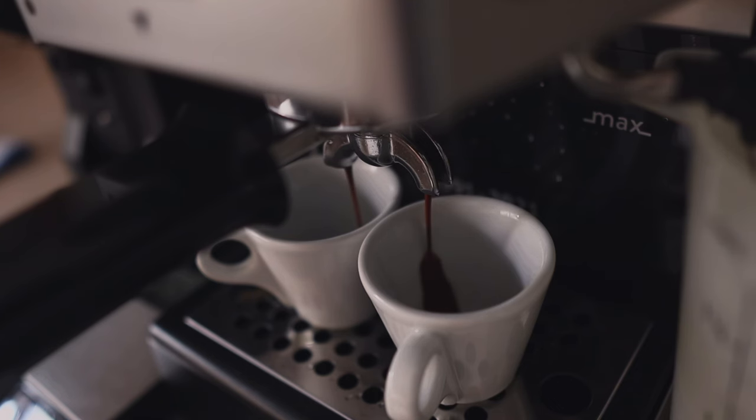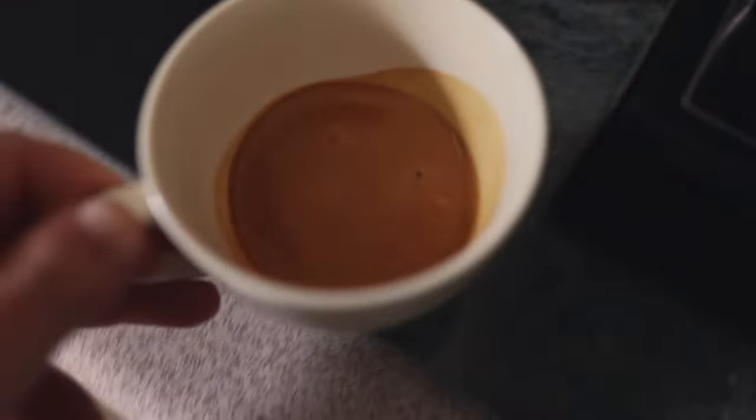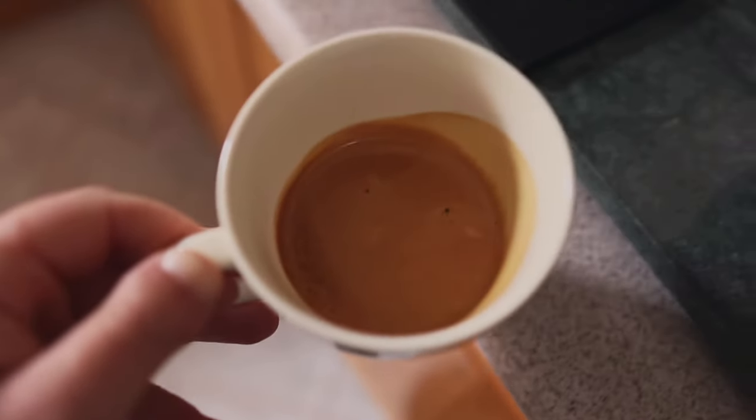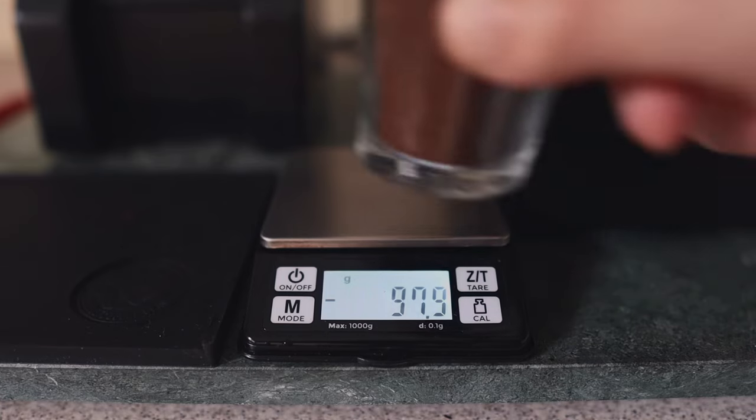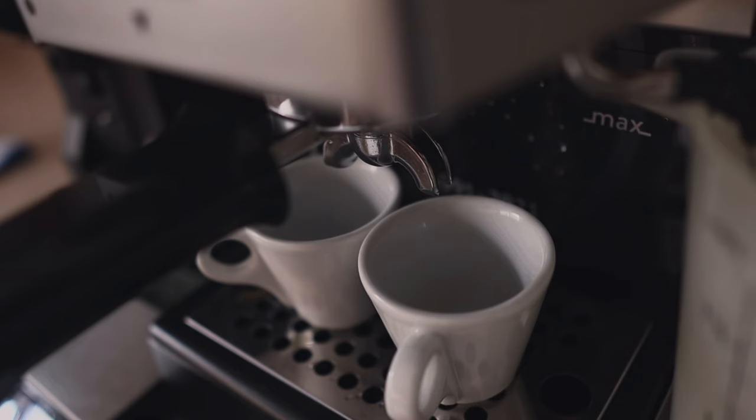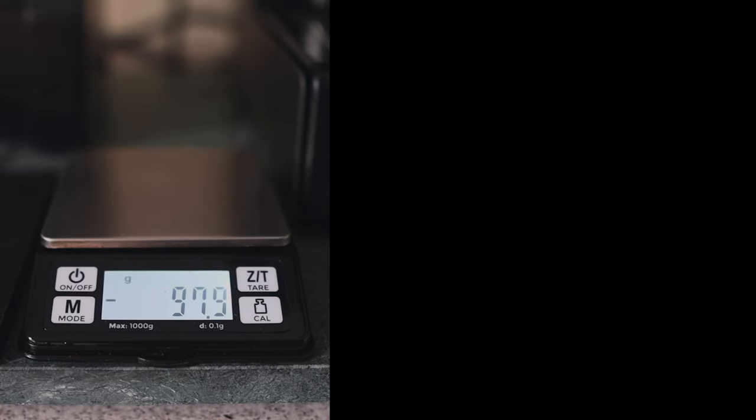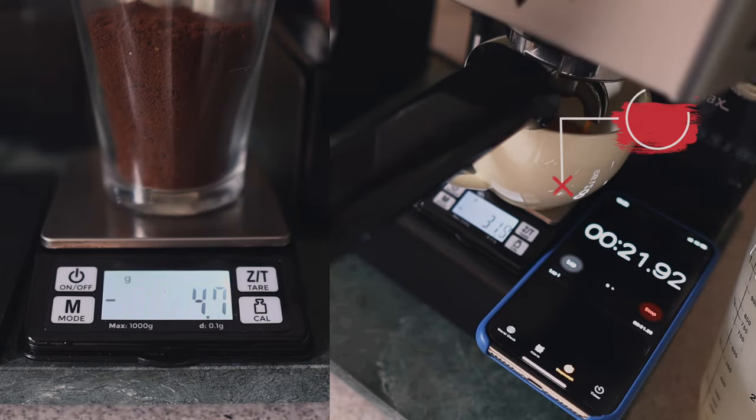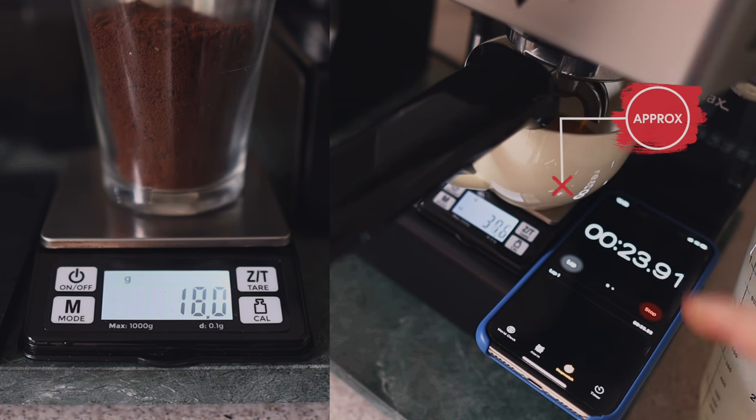So how to prepare great espresso from home without the advantageous features of entry-level consumer machines or more expensive prosumer machines? Firstly, it's important to single dose each and every shot you prepare. Here's the recipe I've used on the Gaggia Classic Pro for a double shot of espresso: 18 grams of coffee in, 36 grams of coffee out in 25 seconds.